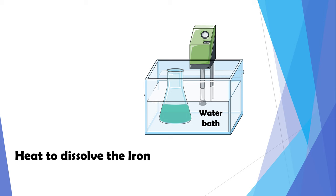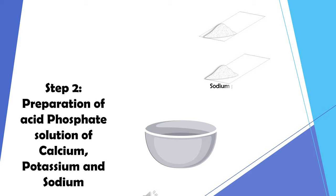Second step is the preparation of solution containing acid phosphate of calcium, potassium and sodium. And this is done by trituration.